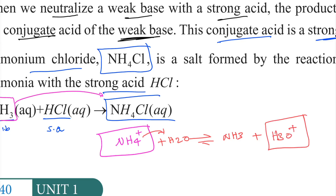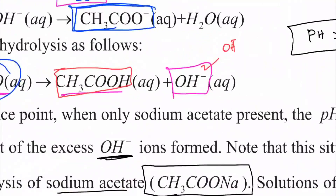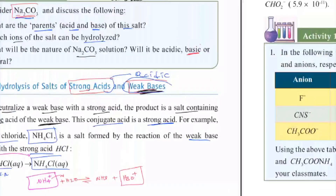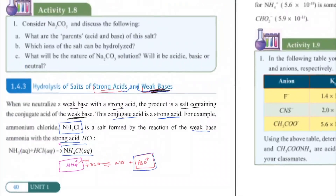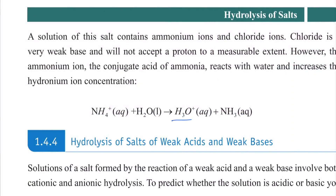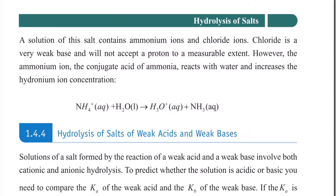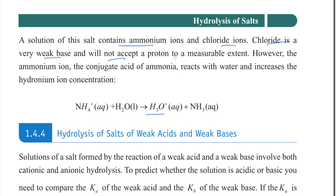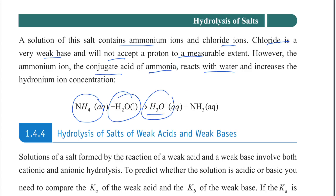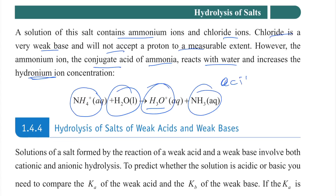The hydrolysis produces hydronium ions. Chloride is a very weak base and will not accept a proton. However, the ammonium ion — the conjugate acid of ammonia — reacts with water to produce hydronium ions and ammonia. The concentration of hydronium exceeds that of hydroxide, so the solution is acidic. Strong acid plus weak base gives an acidic solution.